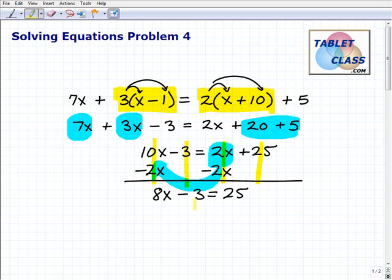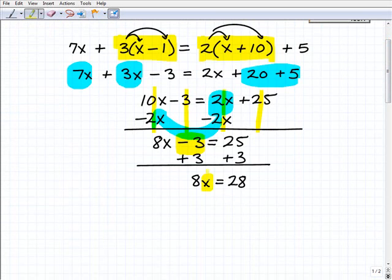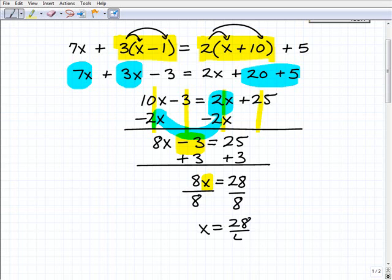We're getting pretty close to solving this equation. But I've got to get rid of this negative 3 on the right-hand side of the equation. So I'm going to add a positive 3 to both sides. And I'm going to get 8x equals 28. Last but not least, to solve for x, I simply have to divide both sides of the equation by 8. 8x equals 28 over 8.